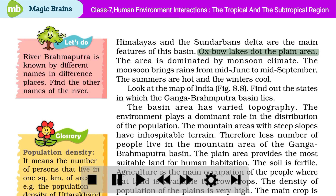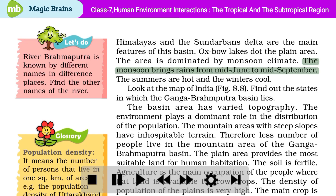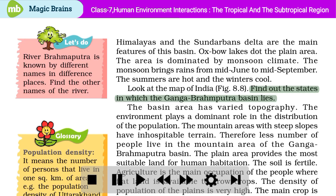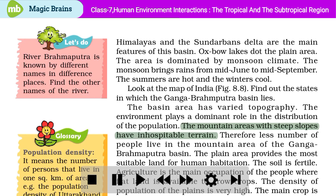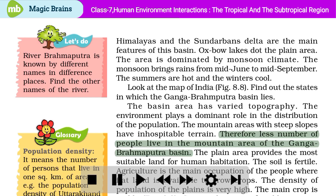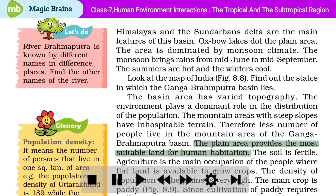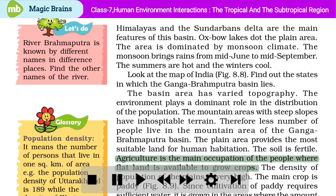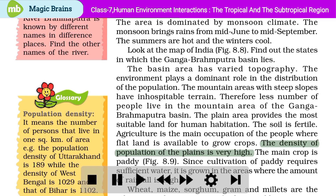Oxbow lakes dot the plain area. The area is dominated by monsoon climate. The monsoon brings rains from mid-June to mid-September. The summers are hot and the winters cool. The basin area has varied topography and the environment plays a dominant role in the distribution of population. The mountain areas with steep slopes have inhospitable terrain, therefore less number of people live in the mountain area. The plain area provides the most suitable land for human habitation. The soil is fertile. Agriculture is the main occupation where flat land is available to grow crops. The density of population of the plains is very high.